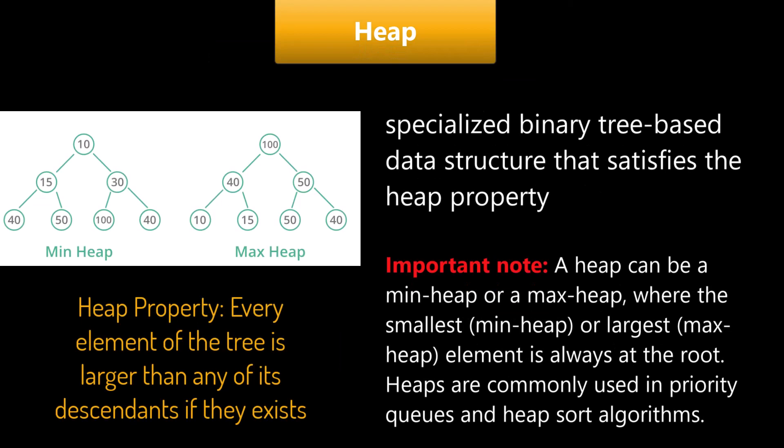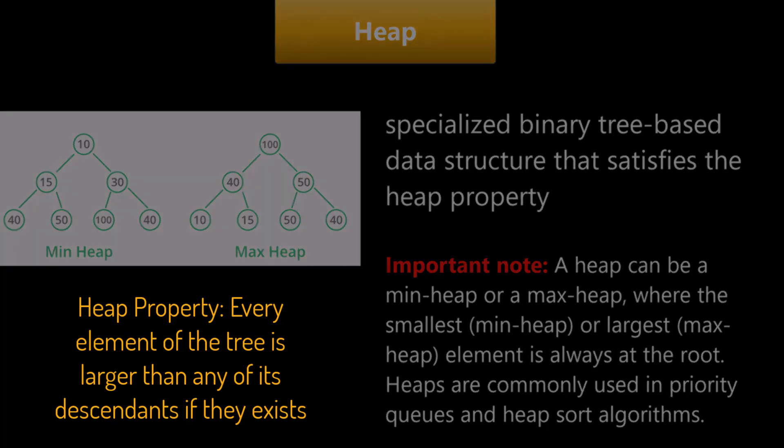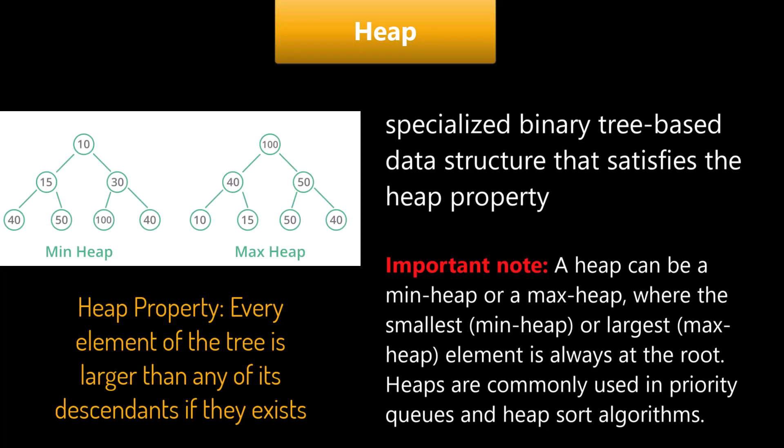Now let's talk about heap, which is a specialized binary tree-based data structure that satisfies the heap property. A heap can be a minimum heap or a max heap, where the smallest, which is the min heap, or largest max heap element is always at the root. Heaps are commonly used in priority queues and heap sort algorithms.